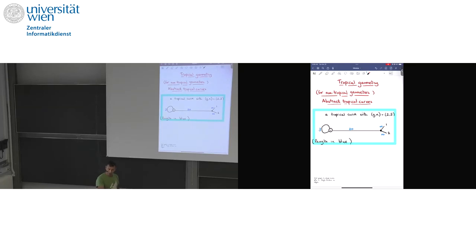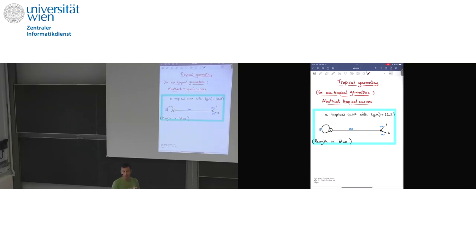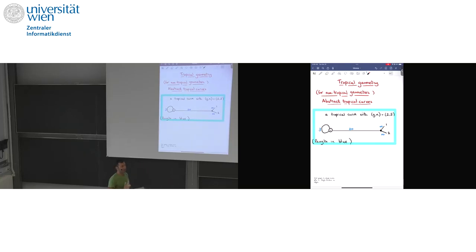It will have more structure that I have removed — it will have an embedding into a plane, and so it will have this extra thing called the balancing condition; it will have ends going to infinity that don't correspond to marked ends. What I'm doing right now is distilling — historically we went from embedded manifolds to abstract manifolds. This is the abstract version. I'm just retaining some of the invariants that I want to remember.